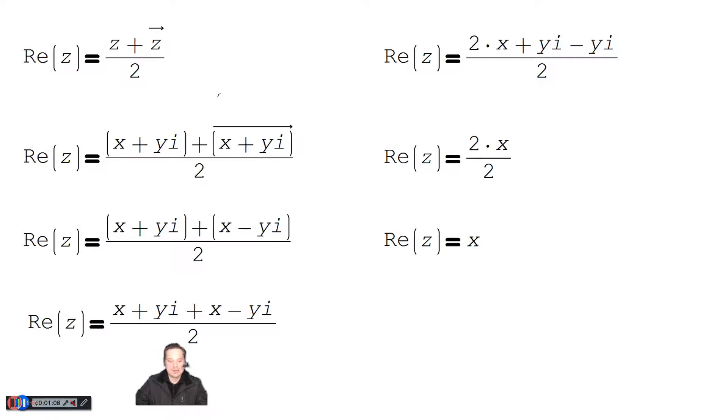Continue. Notice that here we have x and x like terms, and then yi minus yi terms that can be canceled. So we now have 2x plus yi minus yi over 2. And of course, yi minus yi is just 0. So you end up with 2x over 2, and then just cancel off the 2s in that position.